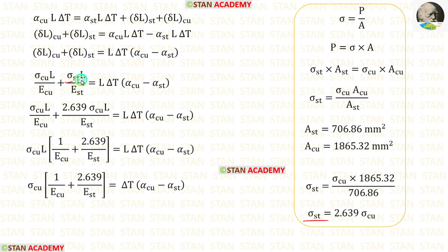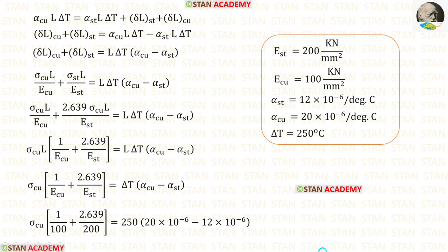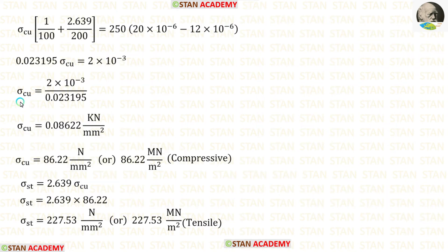For sigma ST we can apply 2.639 sigma Cu. Sigma Cu and L are common, we can take them outside and then eliminate L. Then let us apply the Young's modulus values, alpha values, and delta T.